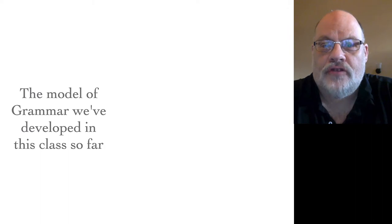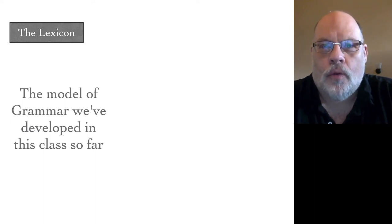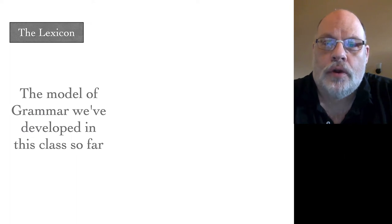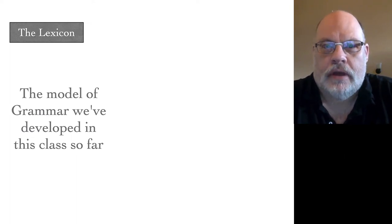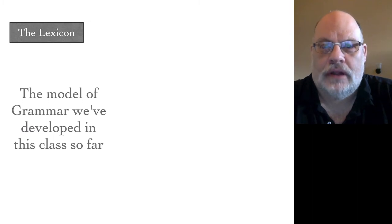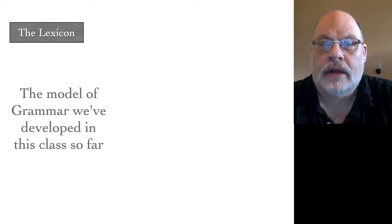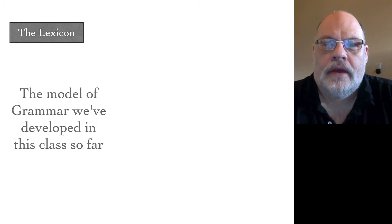This model really consists of two major parts. On one side, we have the lexicon. The lexicon is the list of information about words that's not predictable. For every word, we have an entry, like a dictionary entry, that contains the word's pronunciation, the word's meaning, any morphological irregularities, and most important for us, thematic information and selectional information — the kinds of information that govern how that word is going to function in the syntax.